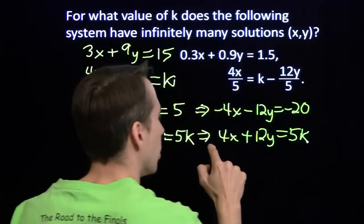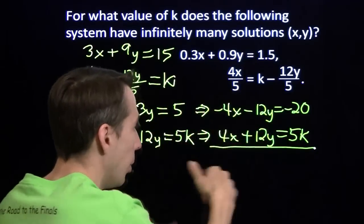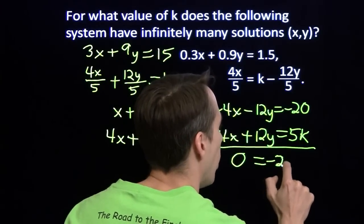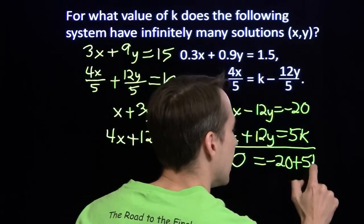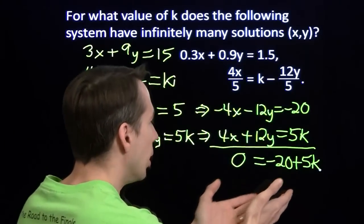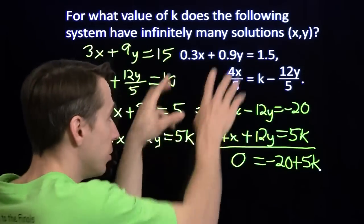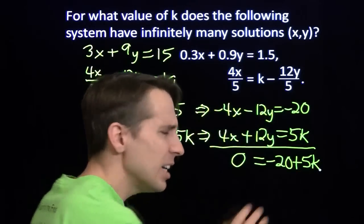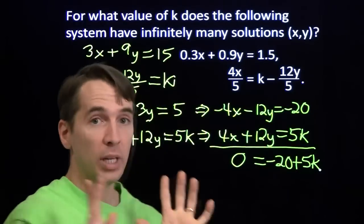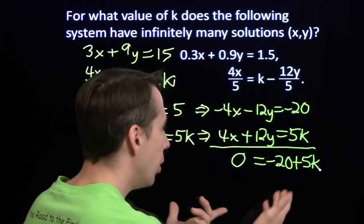Now we add the two equations. And on the left, all the variables cancel. X and y, both of them, everything is gone. We get 0 equals negative 20 plus 5k. Let's think about what we want over here. We want infinitely many solutions. We want these equations to come out to be the same thing. Now if k is anything other than 4, if k is 4, then we get 0 equals 0. If we solve that linear equation, we get k equals 4. We'll end up with 0 equals 0.